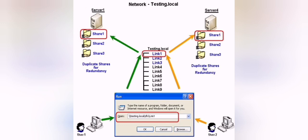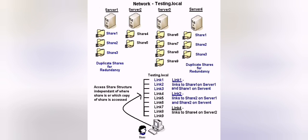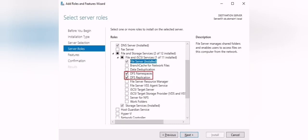DFS allows you to distribute your files among two or more servers in a way that all data will be replicated in real time. At the same time, you access the server through a virtual namespace. Users or employees will access either server one or server two and will not feel any interruption or downtime in case one of the servers goes down.